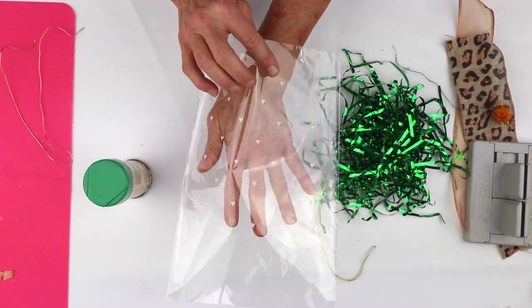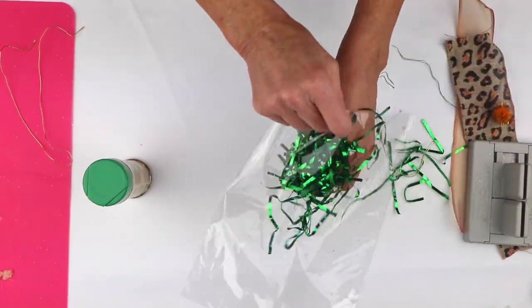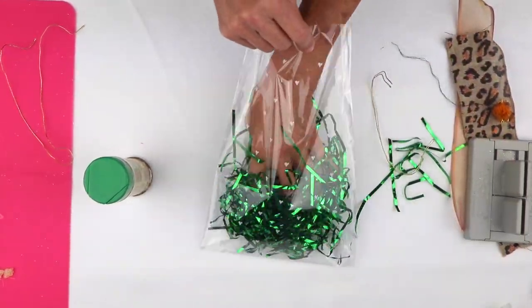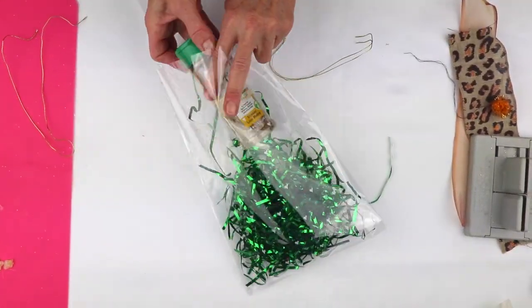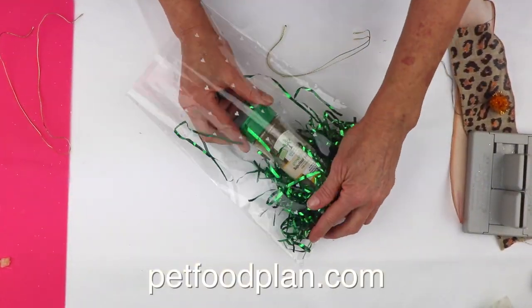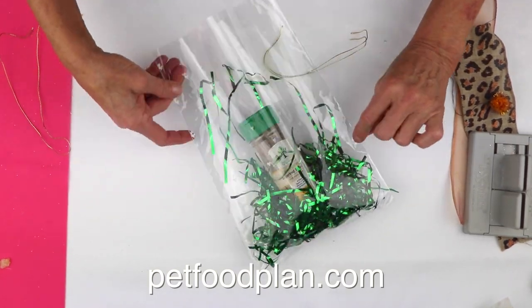And so I'm going to take this cute little bag and I'm just going to put my green fill in there. Then I'm going to take my jar of Paw Pairings. I get this at petfoodplan.com in case you're interested.